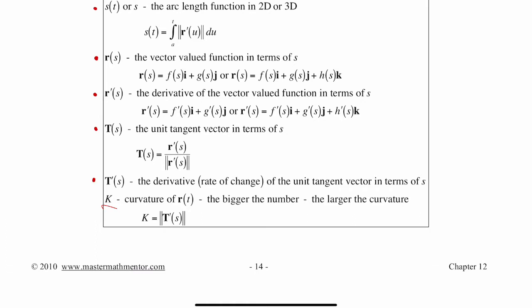We then want to take the derivative of T. This would give us the rate of change of the unit tangent vector in terms of s. Finally, we could find K, which is the magnitude of T'(s).